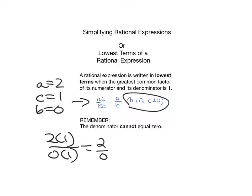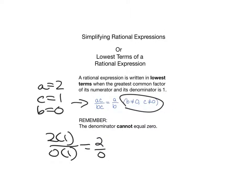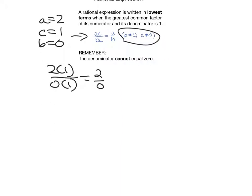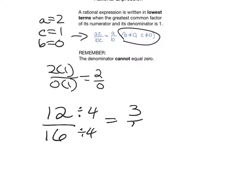Let's talk about simplifying easy fractions. If I gave you 12 over 16 and asked you to simplify, a lot of people will divide by 2 because they're even numbers. But technically, the appropriate way is either to factor and cancel out common factors, or to divide by the greatest common factor. If you divide by 4, it goes directly to simplified form. If you divide by 2, you'd get 6 over 8 and have to do it again.